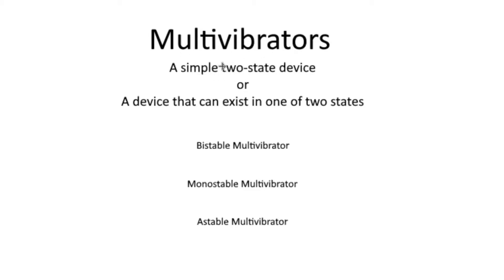Now that we're getting into sequential logic, we're starting to cover circuits that require the knowledge of state or the storage of state. One of the things you're going to learn as we progress through this whole collection of circuits is that state and time are kind of interchangeable. One of the circuits that is crucial to managing state and managing time is something called a multivibrator.